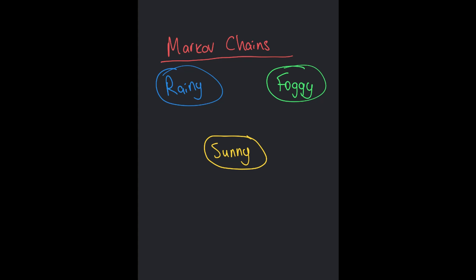Say that we are in the sunny state right now — this little x marks where we are. If we're in the sunny state today, tomorrow it could either be rainy, foggy, or it could also be sunny again. Say our x moves over to the rainy state — so the next day was rainy. Now today is rainy and tomorrow it could be foggy, sunny, or rainy again. Say our x moves over to the foggy state — again it could be foggy, rainy, or sunny the next day.